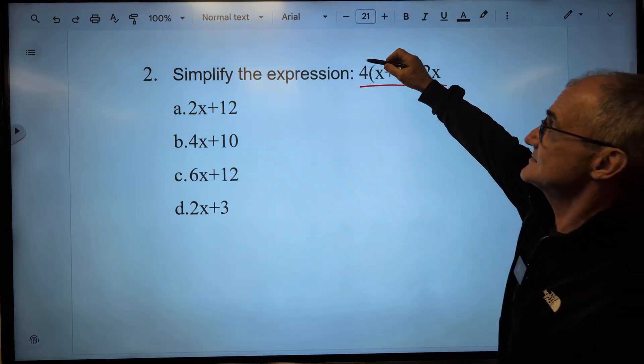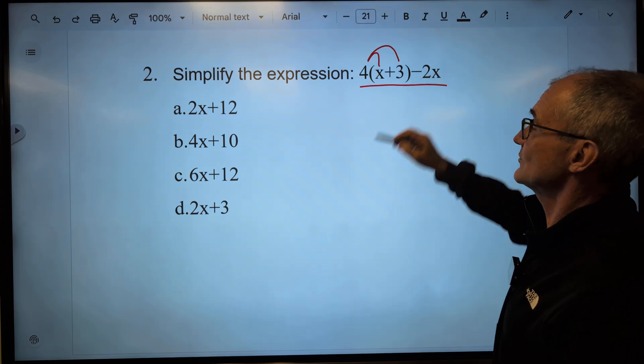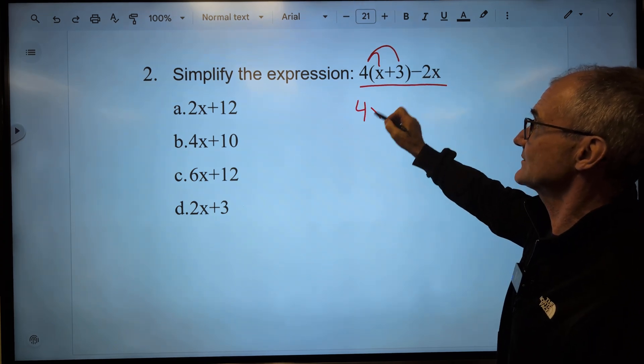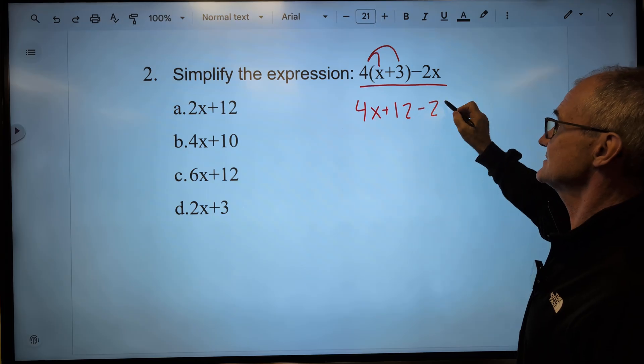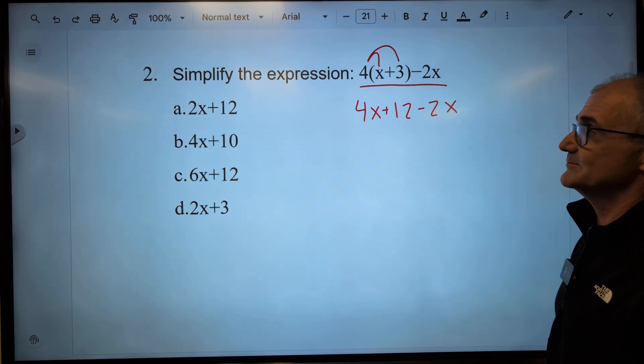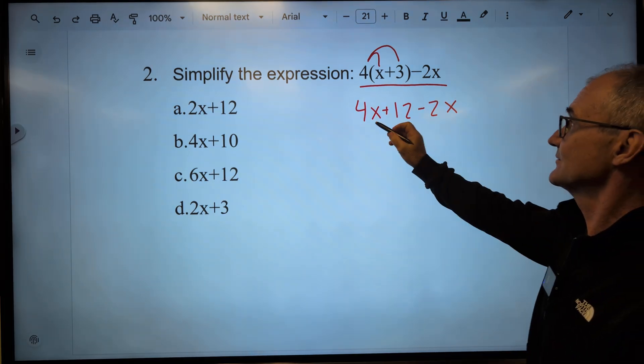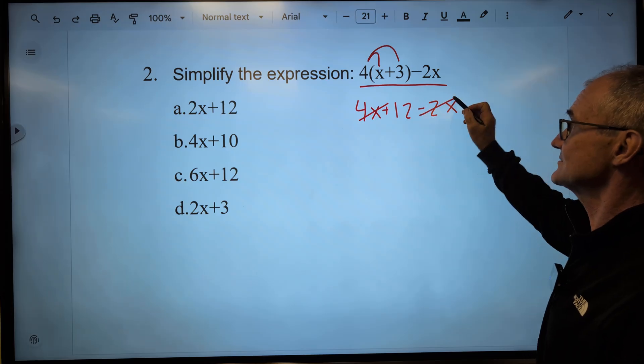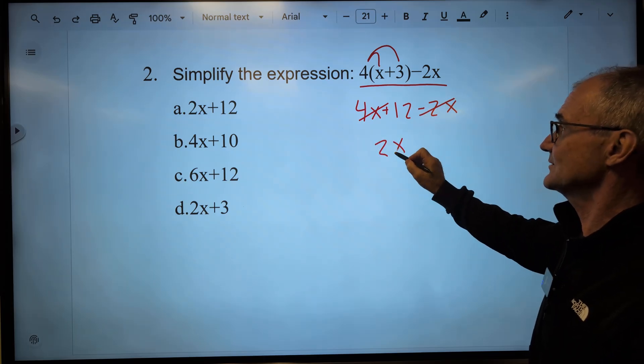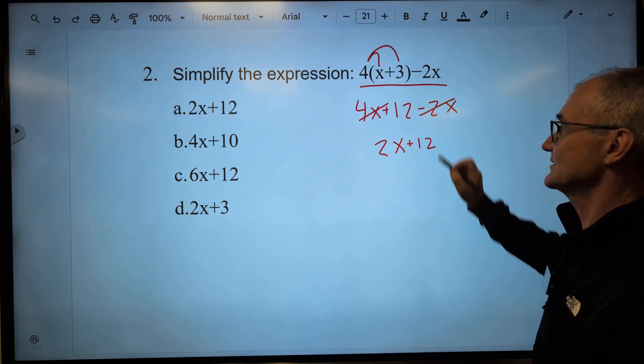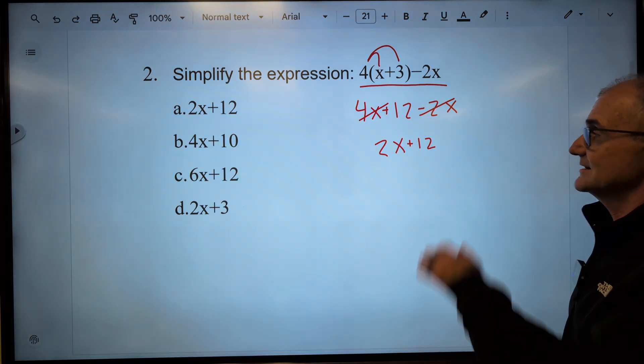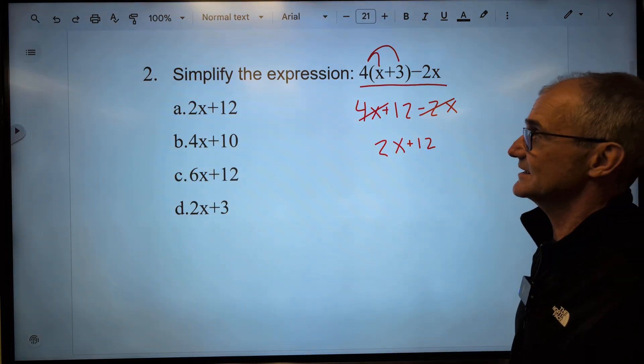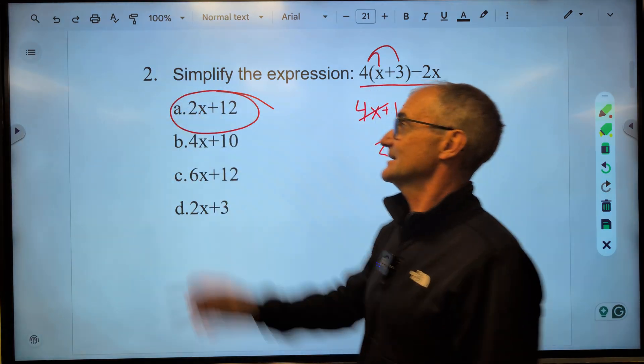So what I'm going to do first is distribute this 4 through the quantity to get 4x plus 4 times 3 minus 2x. Combine similar terms. 4x minus 2x is positive 2x plus 12. These are dissimilar terms, so I can't do anything with them. That's as far as I could go in my simplification. Correct answer, answer A.